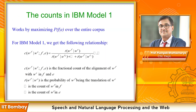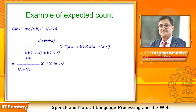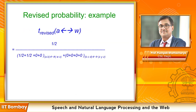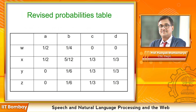Then the computation proceeds. The expected count C is created from the expression shown here. C is the expected count, T is the alignment probability. So C is expressed in terms of T, and T is expressed in terms of C. We need to look at the theory, but the computation proceeds this way. It is an iterative greedy algorithm and it maximizes the likelihood of the alignment — the probability of the two sentences.